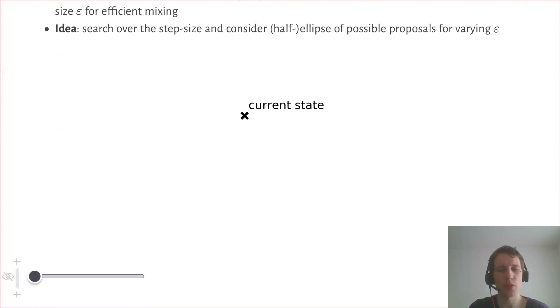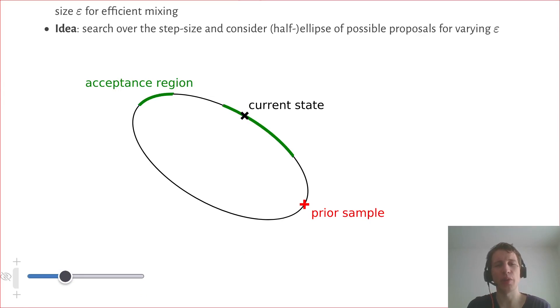Visually, this means when we're in a state of the Markov chain, we sample from the prior and this defines an ellipse of possible next states. We then have a specific part of the ellipse where we accept proposals based on the likelihood.